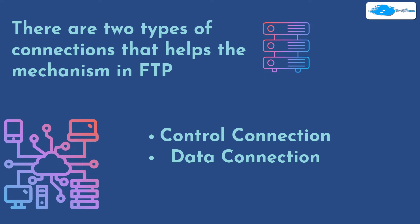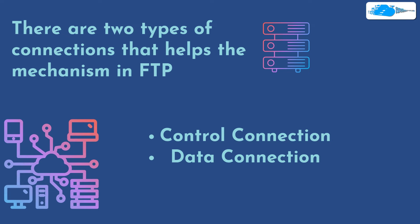There are two different types of connections in FTP: the control connection and the data connection. In the control connection, the FTP client sends a connection to a specific port on the server; this connection is used to send commands telling the server what to do and receive responses accordingly. In the data connection, once the server receives the controlling commands from the client, it provides what was requested through a separate dedicated connection.